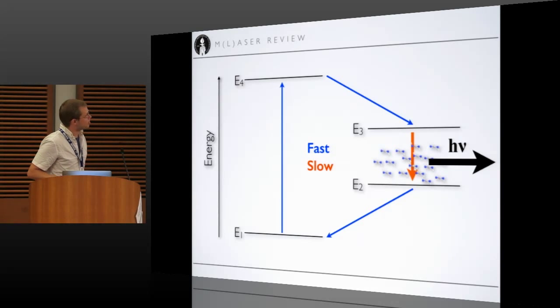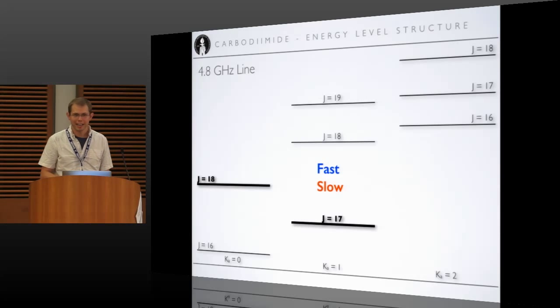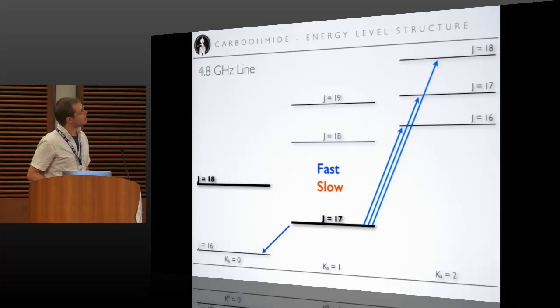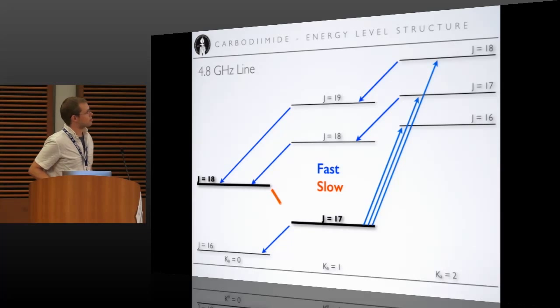So if we go and look at the energy level diagram for carbodiimide, it's more complicated, but we can step through it the same way. So these are the two energy levels involved in the four gigahertz transitions. And there's fast transitions out of the ground state, there's fast transitions into the excited state, and there's a slow transition between them.